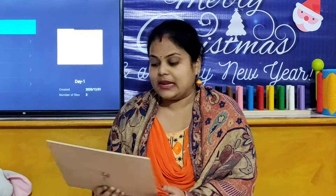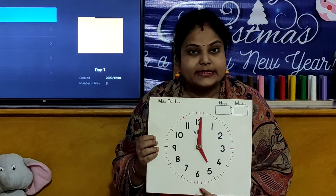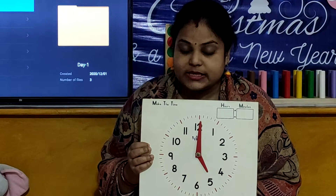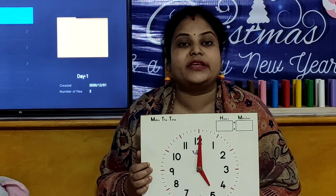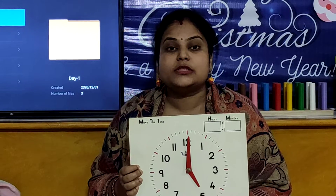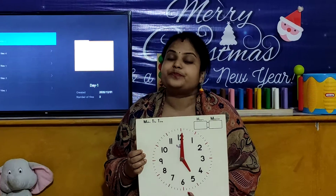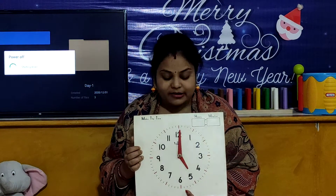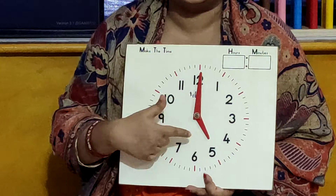So children, first tell me what is this? It is a clock. And children, we use clock, we use watches to see the time or to know the time. And these clocks, these watches help us to reach at any place on time.